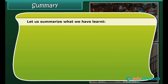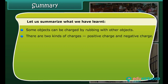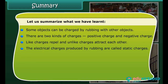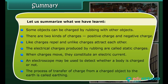Let us summarize what we have learned. Some objects can be charged by rubbing with other objects. There are two kinds of charges: positive charge and negative charge. Like charges repel and unlike charges attract each other. The electric charges produced by rubbing are called static charges. When charges move, they constitute an electric current. An electroscope may be used to detect whether a body is charged or not. The process of transfer of charge from a charged object to the earth is called earthing.